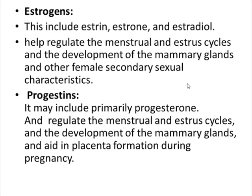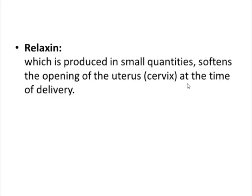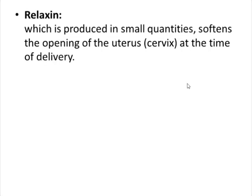The next class is the progestins, which primarily include progesterone. Progesterone helps regulate the menstrual and estrous cycle and the development of the mammary glands, and it aids in placenta formation during pregnancy.